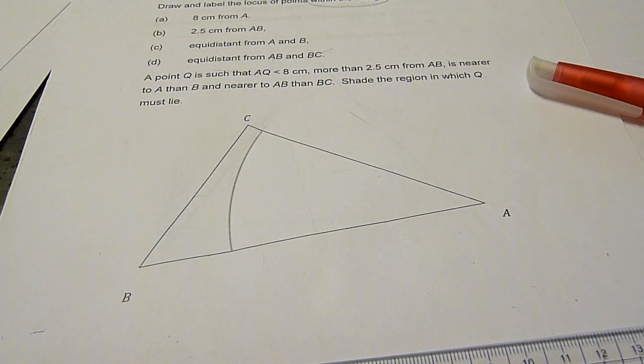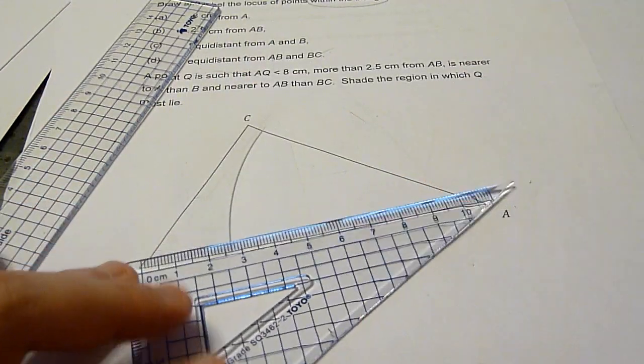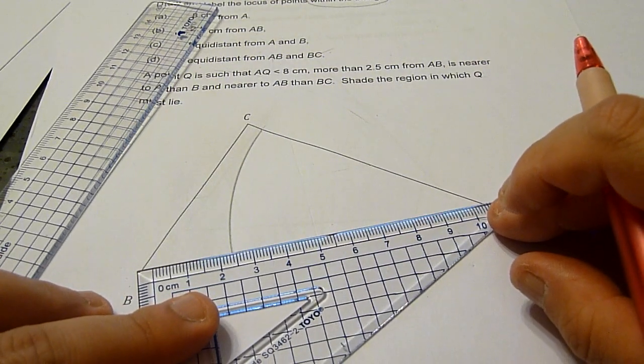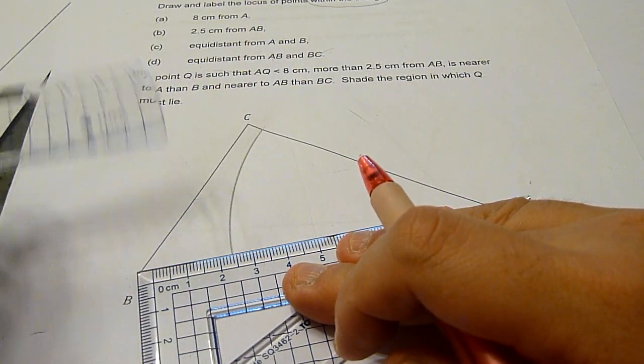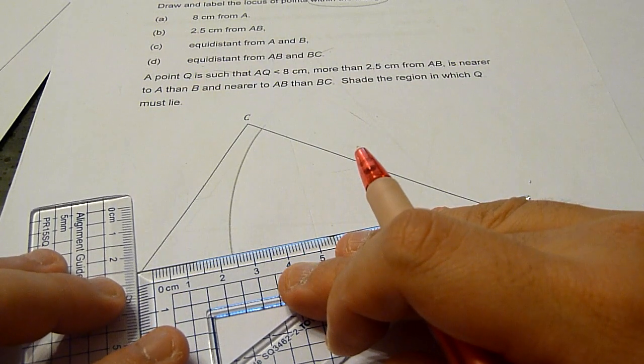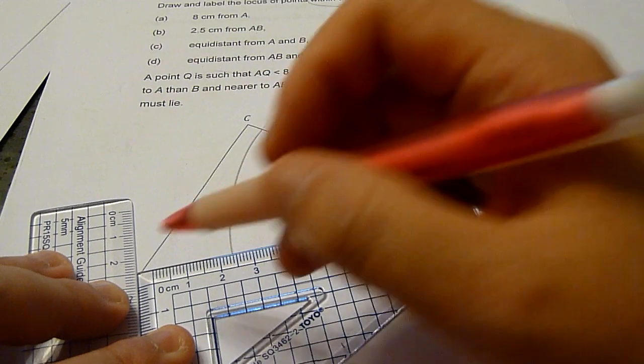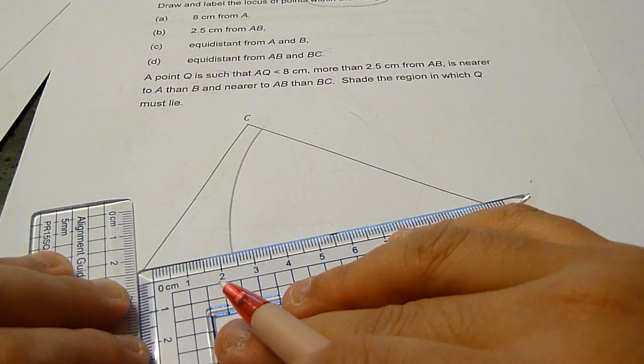Next, it is two point five centimeters from AB, which means we are going to have a line that is parallel to AB, and the line should be above AB. Since it is two point five centimeters, we will place the ruler such that it is at the mark two point five centimeters on the ruler, and we move the set square up.